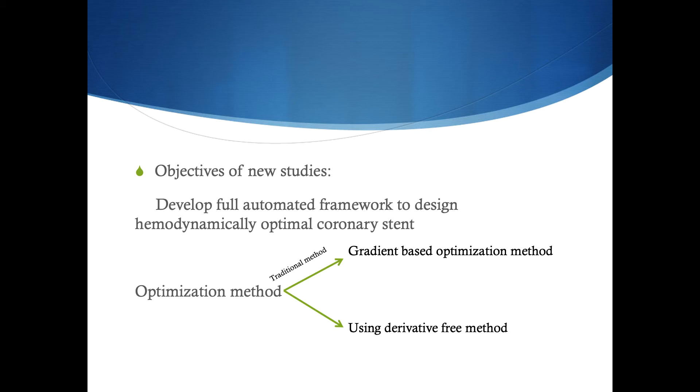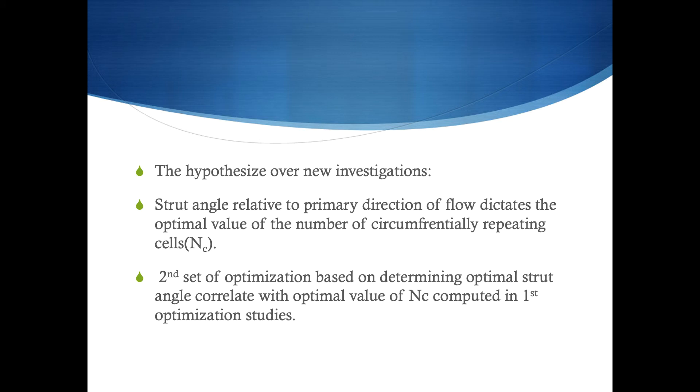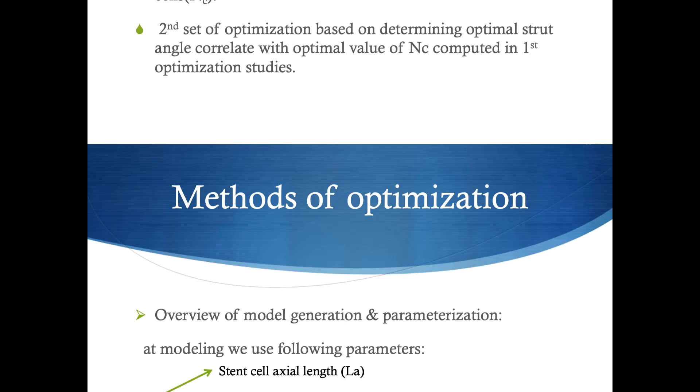The gradient-based optimization method and derivative-free method help us develop an automated framework to design hemodynamically optimal coronary stents. The hypothesis says that the strut angle and primary direction of flow has an optimal effect on the number of circumferentially repeated cells. The second set of optimization is based on determining the optimal strut angle correlated with the optimum number of cells computed in the first optimization method.